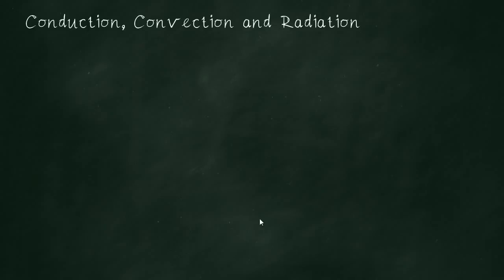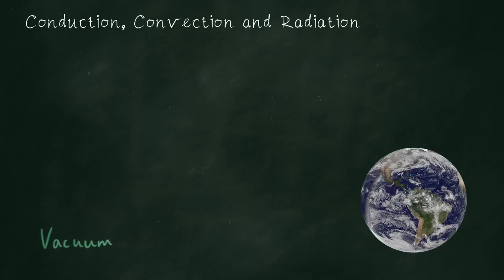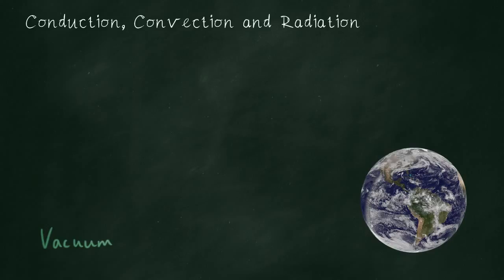Next we're going to talk about radiation - infrared radiation. Now, infrared is the only one that doesn't need particles to travel. Here we are in the vacuum of space. This is a vacuum. There's no particles here whatsoever. Now, how then does heat reach us from the sun? The answer is it reaches us as infrared.